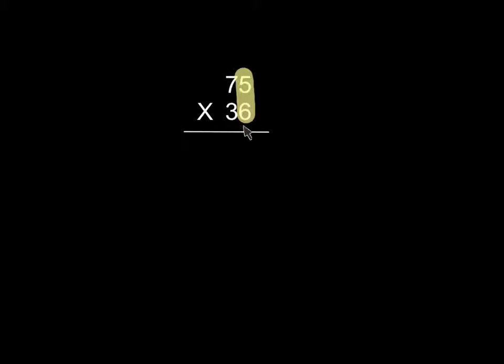Just like we do with addition, we're going to start with the numbers in the ones column. We're really starting with the six, and we're going to multiply six times five first.